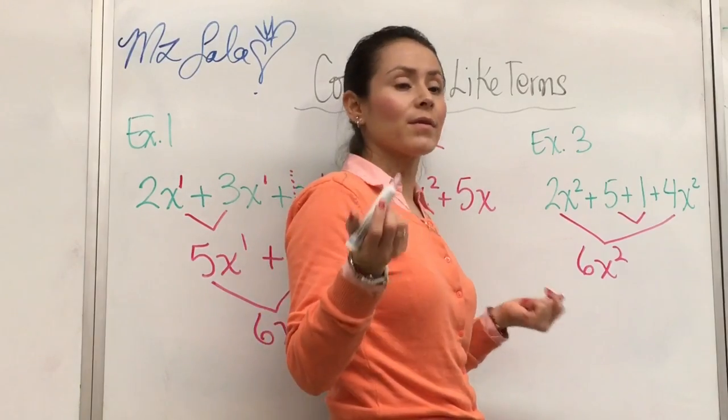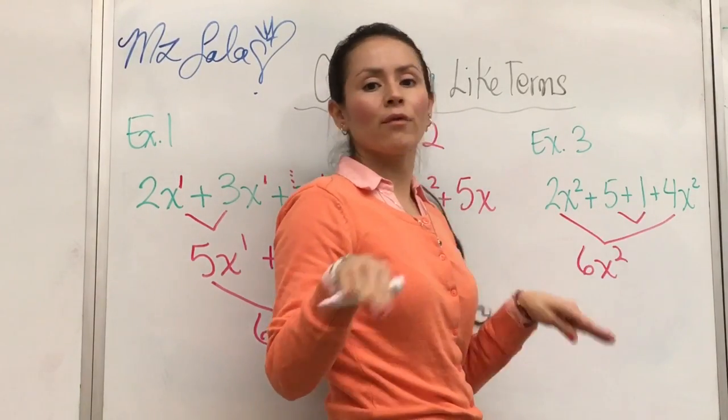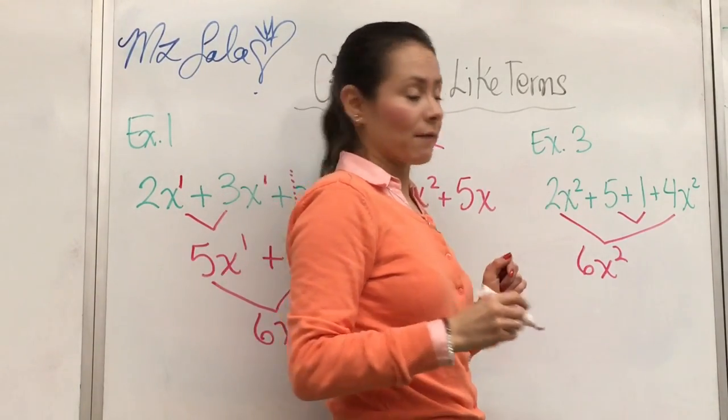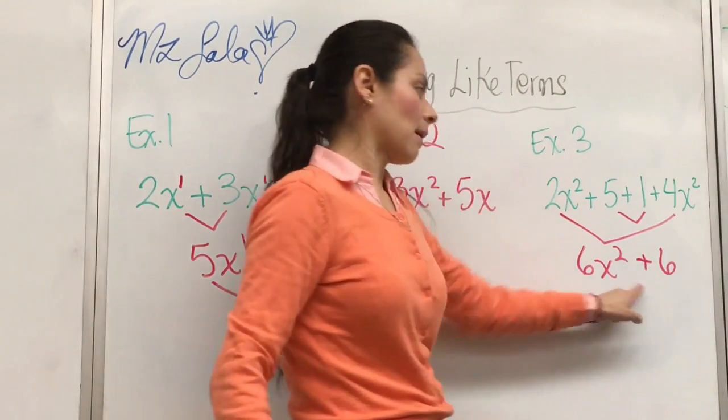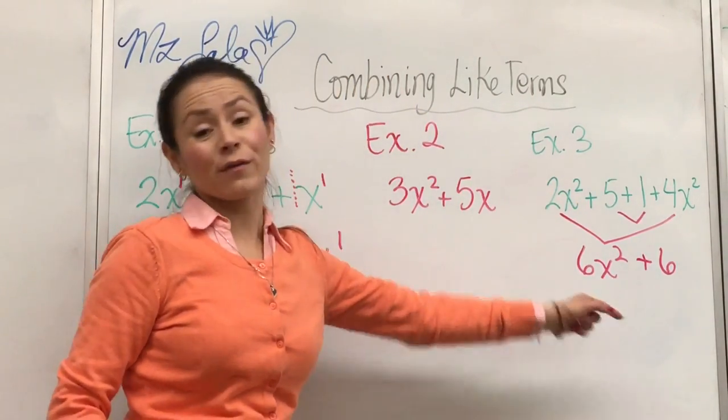Remember here we have two constants, the 5 and the 1. They're both just numbers, no variables. So we can combine 5 plus 1, and that would be plus 6. And that would be your final answer.